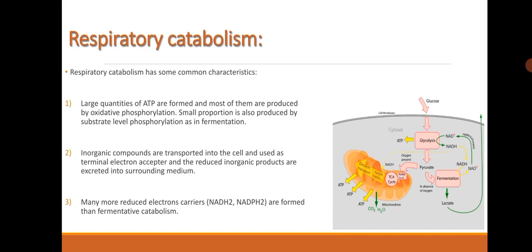Respiratory catabolism has some common characteristics. Large quantities of ATP are formed and most of them are produced by oxidative phosphorylation. Some proportion is also produced by substrate level phosphorylation as in fermentation.